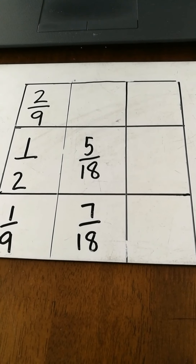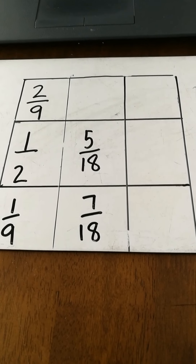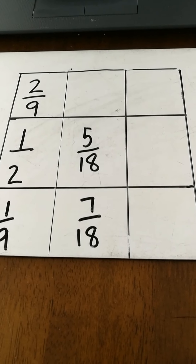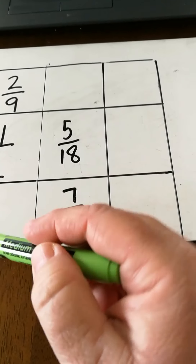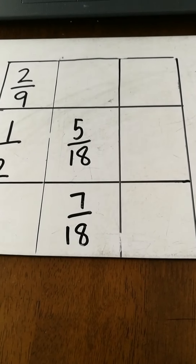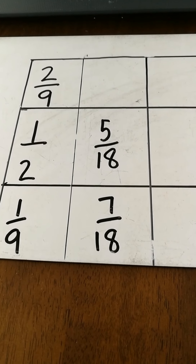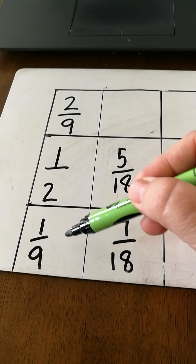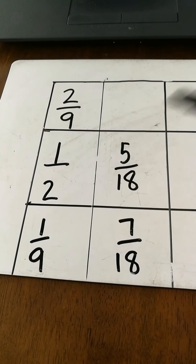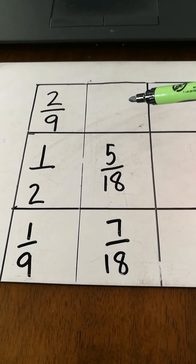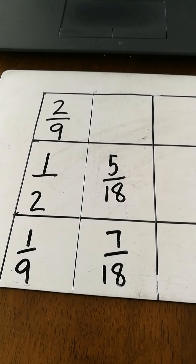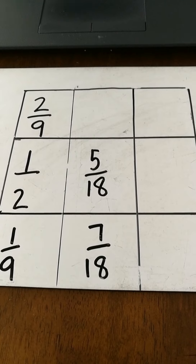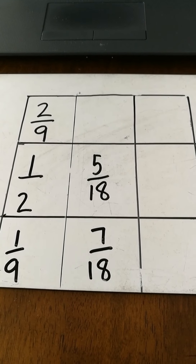Task B asks you to complete the magic square by providing the missing fractions that go into those boxes. What we know about a magic square is that each row, column, and diagonal all adds up to the same amount. The first thing you would need to do is work out what that amount is by adding up those three fractions there. Once you know that, you can work out the missing fraction. If you'd like to go ahead and start that task without any more instruction, you can pause the video now. If not, and you need a little bit more help, listen on.